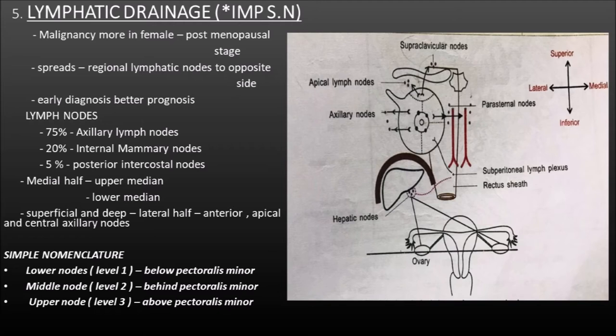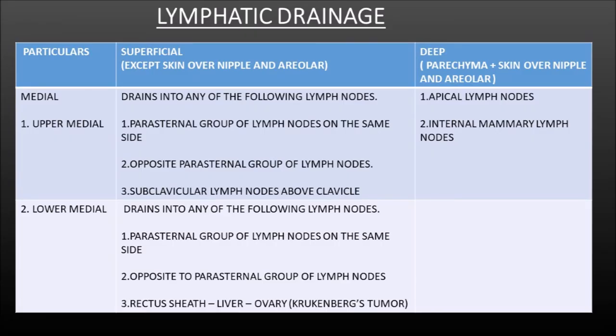The superficial and deep lymphatics of the lateral half of the mammary gland drain into the anterior group, central and the apical group of the axillary lymph nodes. The medial half is divided into upper medial and lower medial quadrants. A simple nomenclature is adapted: level 1 refers to the lower nodes below the pectoralis minor muscle, level 2 is the medium node behind the pectoralis minor muscle, and level 3 is the high node above the pectoralis minor muscle.